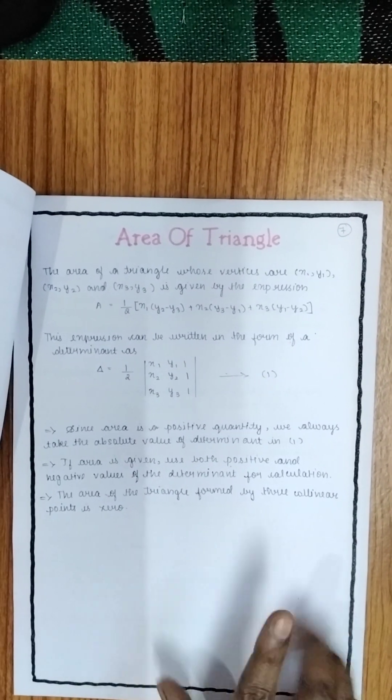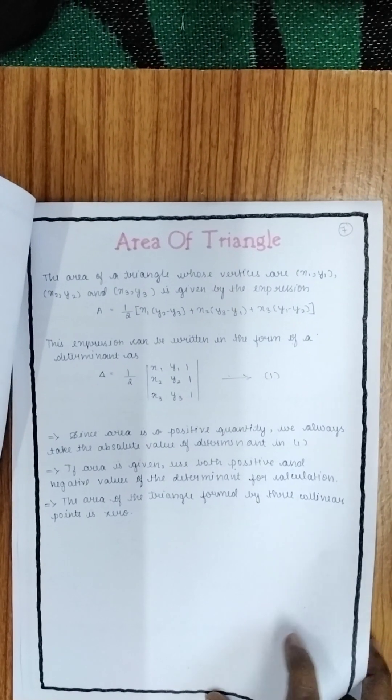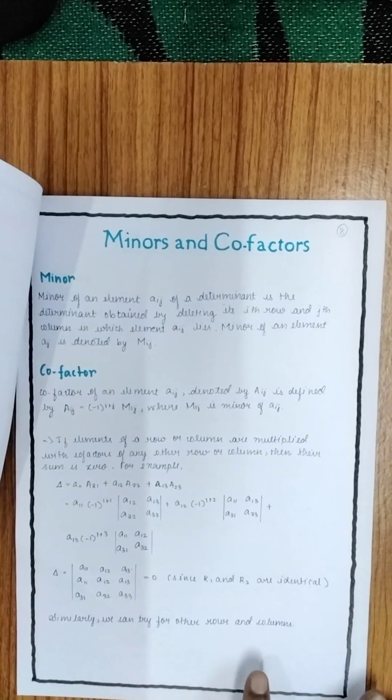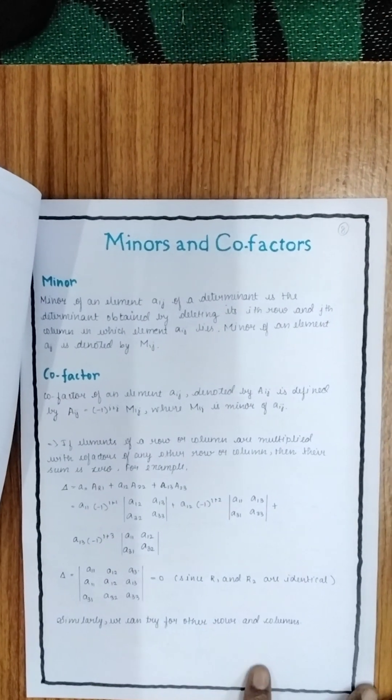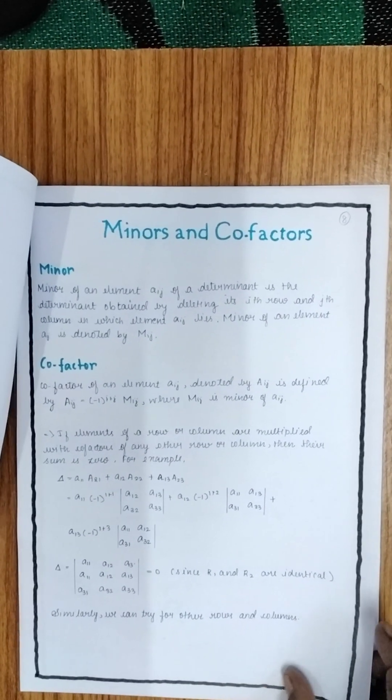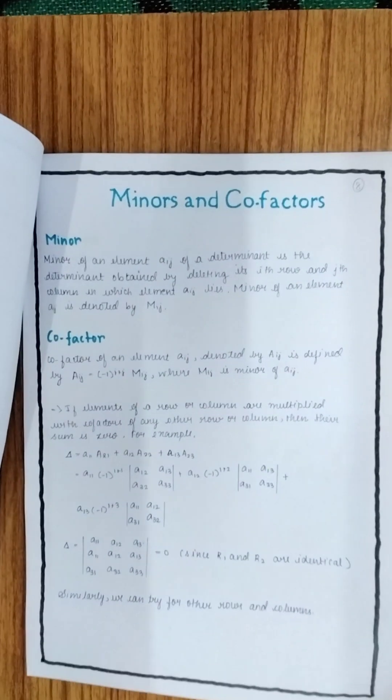The application of determinants finding the area of the triangle is being explained here. The next one, this is one of the applications. How will you find the minor and the cofactor of a determinant? That is being explained here.